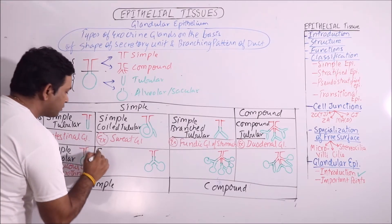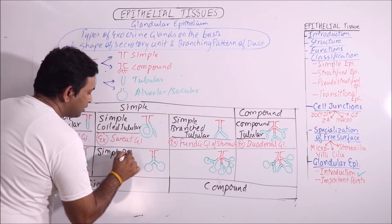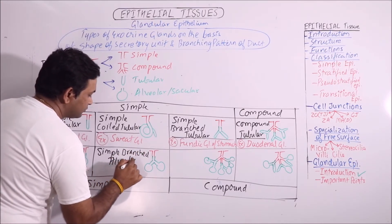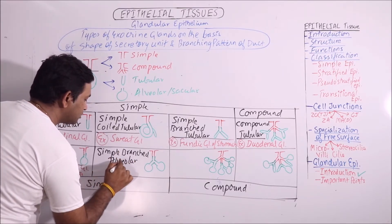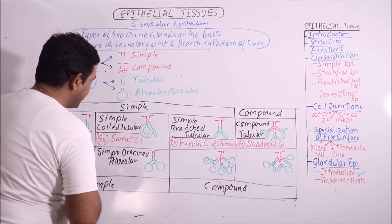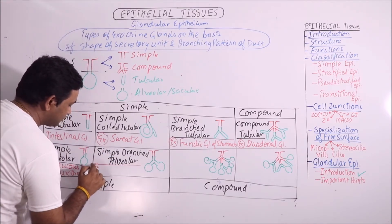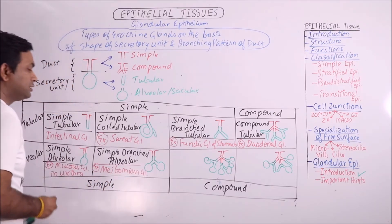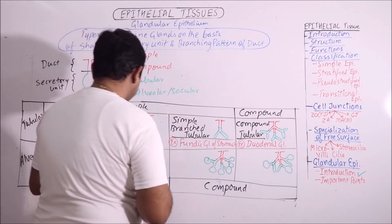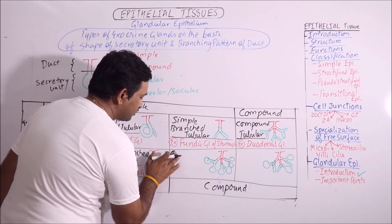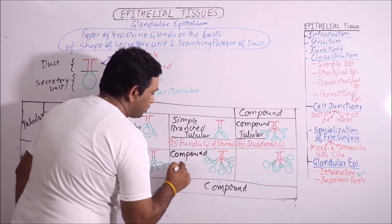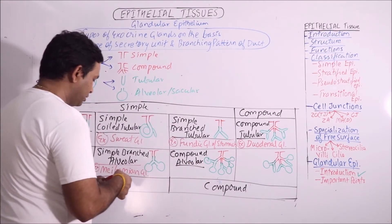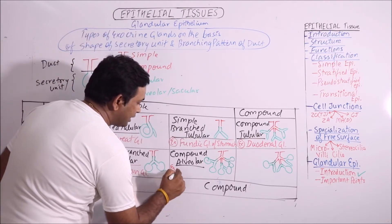This type is simple branched alveolar, and such glands are Meibomian glands related to the eyelids. These are a type of modified sebaceous glands. Then this type of gland has a compound duct system and the secretory units are alveolar, so it is said to be compound alveolar.